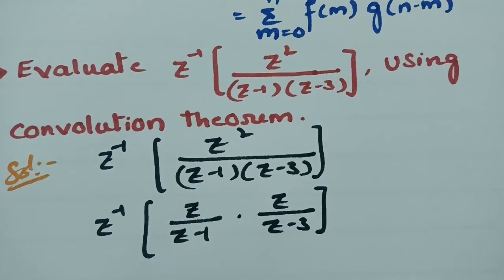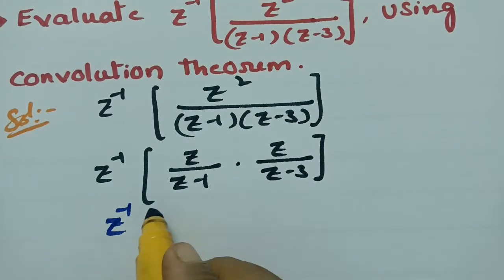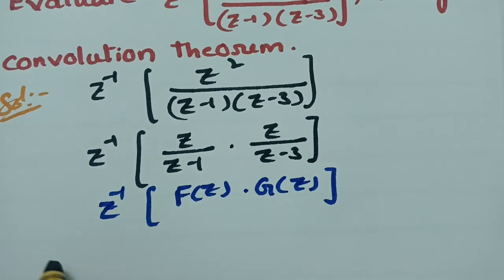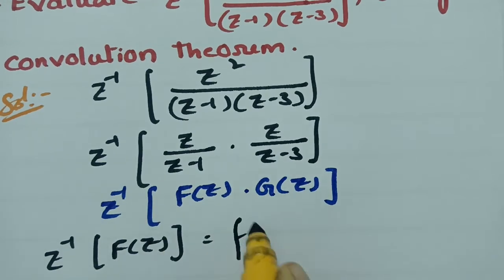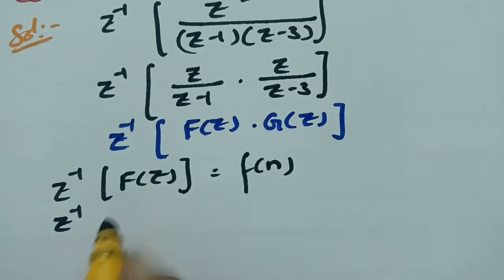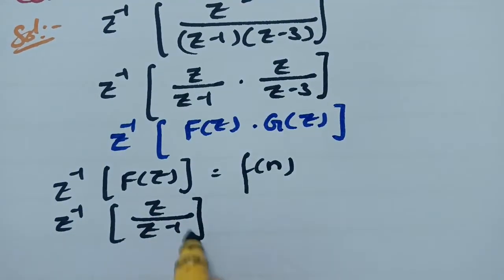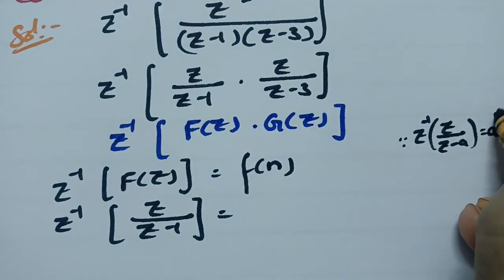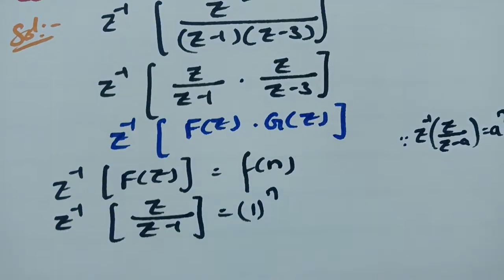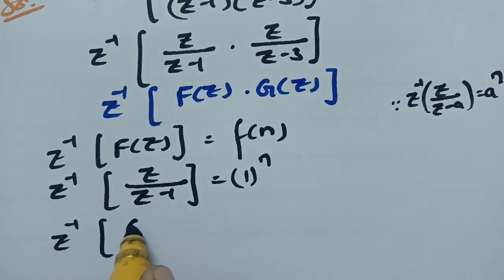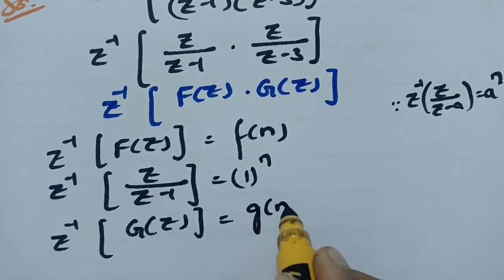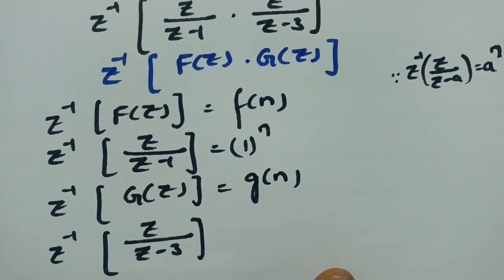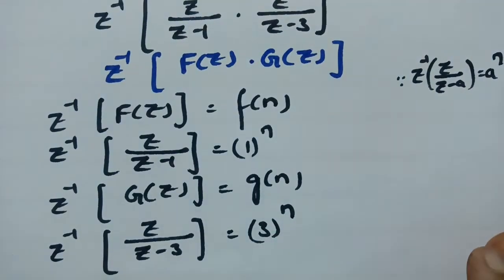We identify F(z) = z/(z−1) and G(z) = z/(z−3). Now we take the inverse Z-transforms of both. Since Z-inverse of z/(z−a) = aⁿ, for F(z) = z/(z−1), a=1, so f(n) = 1ⁿ. For G(z) = z/(z−3), a=3, so g(n) = 3ⁿ.